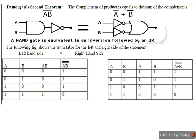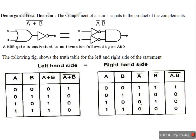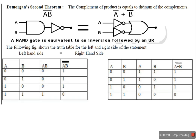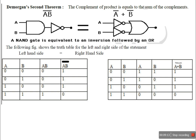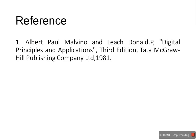This is De Morgan's Second Theorem. So in this module, De Morgan's First Theorem states the complement of a sum is equal to the product of the complements — in other words, an OR gate is equivalent to an inversion followed by an AND. De Morgan's Second Theorem states the complement of a product is equal to the sum of the complements — an AND gate is equivalent to an inversion followed by an OR. Both theorems are verified by truth tables. For further studies, please refer to Digital Principles and Applications written by Albert Paul Malvino and Leach Donald, published by Tata McGraw-Hill Publishing Company.